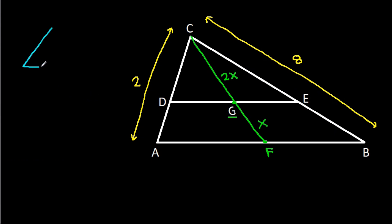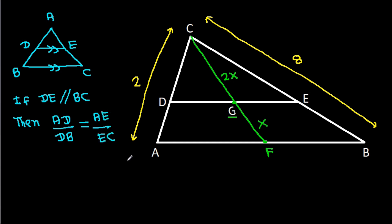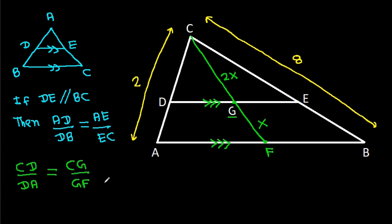Now, in any triangle, if a line is drawn parallel to one side, then by the Basic Proportionality Theorem, the sides are divided proportionally. Here, since DE is parallel to AB, CD to DA will be equal to CG to GF, which is 2x to x, that is 2.